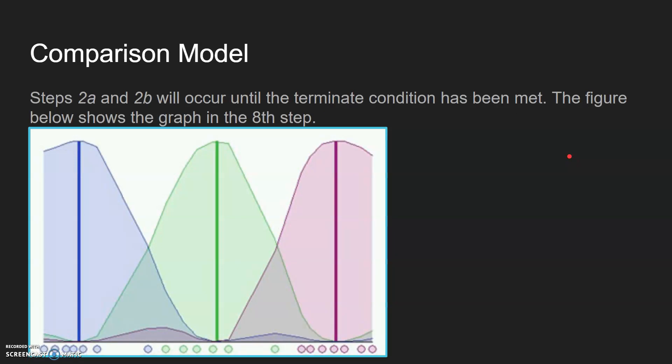Steps 2A and 2B, like I mentioned before, will occur until the termination condition is met. This is the algorithm at its eighth step, which is probably near towards the end where it gets below 0.3.